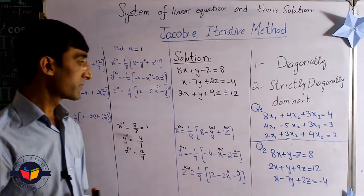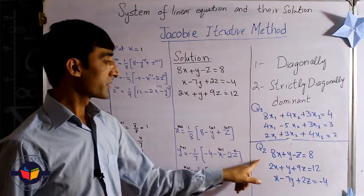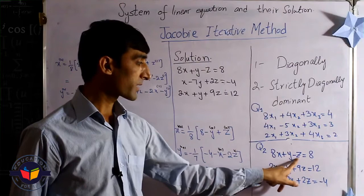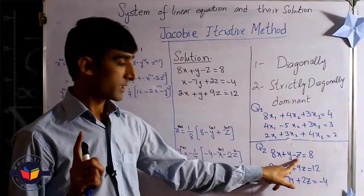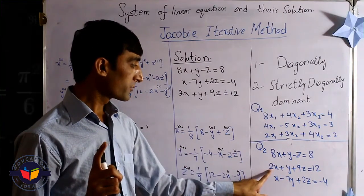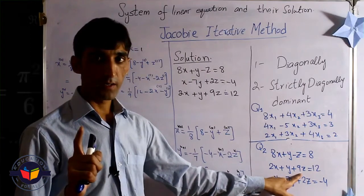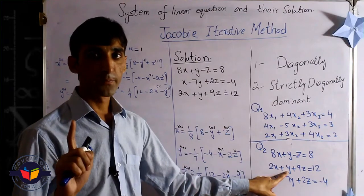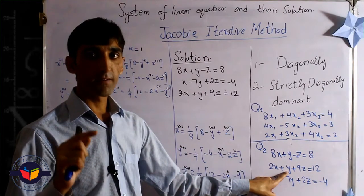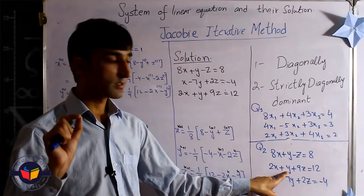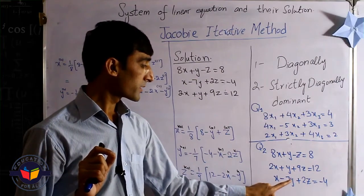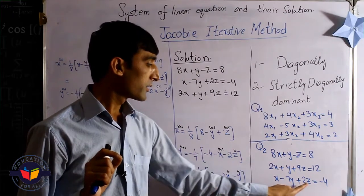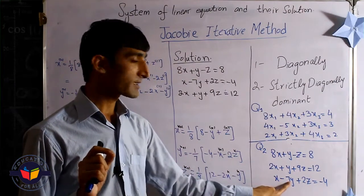In the next question, question 2, you can see the 8 is greater than 1 plus 1, which is 2. In the second one, 2 and 9 is 11 but here is 1, so this one is not diagonally dominant, but we have a choice here. The choice is the third row, this 7. This 7, compared to 2 plus 1 which is 3, and 3 is less than 7.